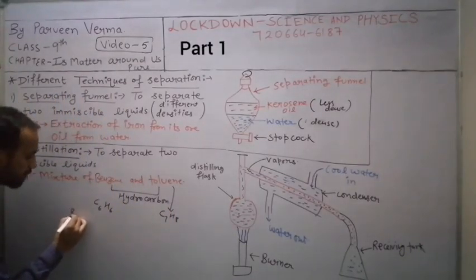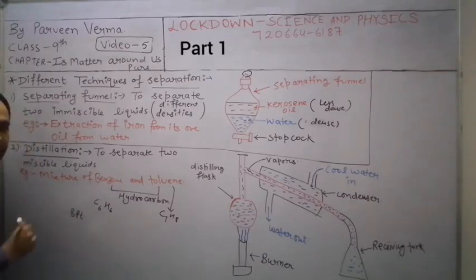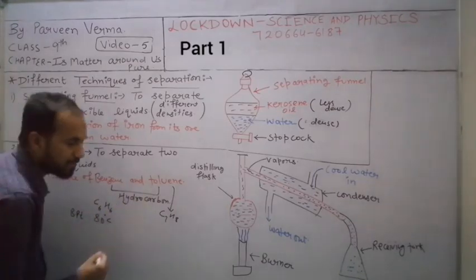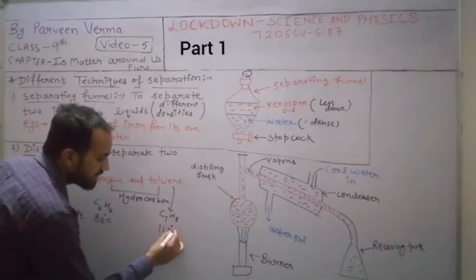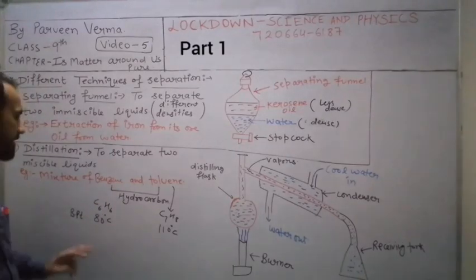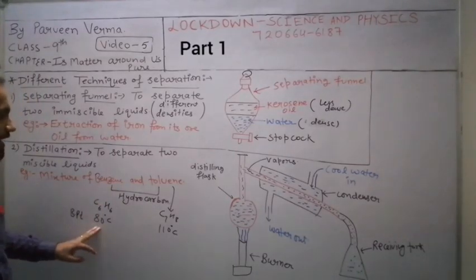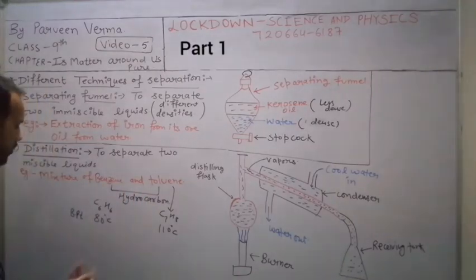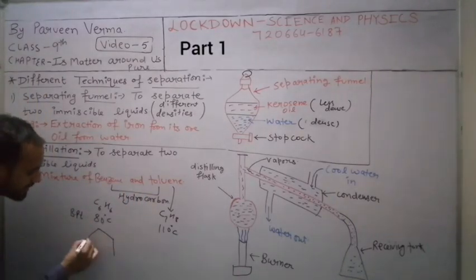Benzene's formula is C6H6 and toluene's formula is C7H8. There is a difference in their boiling points. Benzene's boiling point is 80 degrees Celsius and toluene's boiling point is 110 degrees Celsius. So benzene has a lower boiling point and toluene has a higher boiling point.